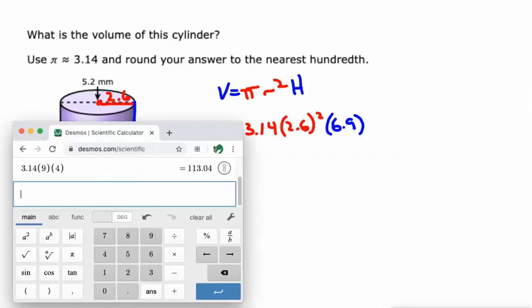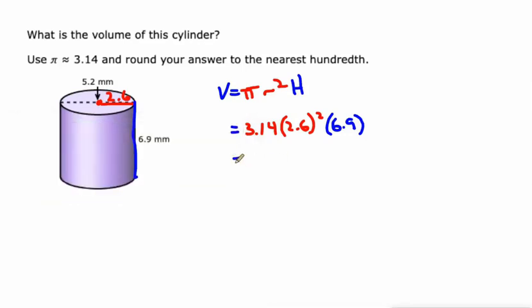I could show multiple steps, but I think it's easiest if we just grab the calculator from here. 3.14 times 2.6 to the second power times 6.9. We're going to round this to the nearest hundredth. That's two decimal places. So 146.46 millimeters cubed, cubic millimeters.